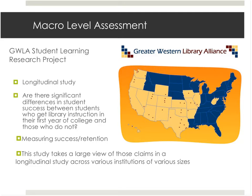If these studies are correct, institutional data on student outcome is a macro level assessment of the effectiveness of student learning outcomes and the success of library instruction, whether on campus or online, depending on the data you examine. I'll leave you with that and pass the mic over to Jenna, who will talk more about the meso level of assessment from a slightly different approach.